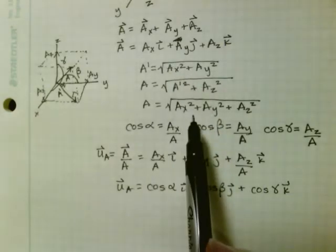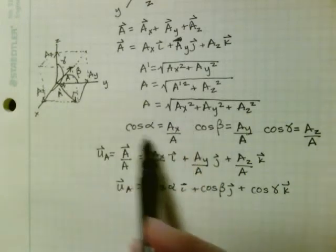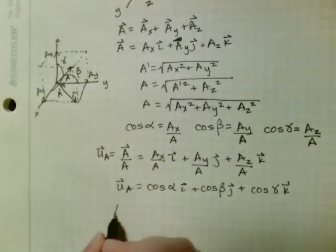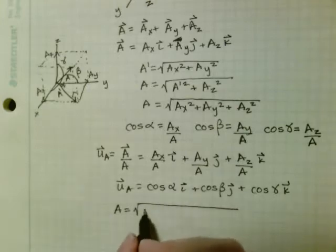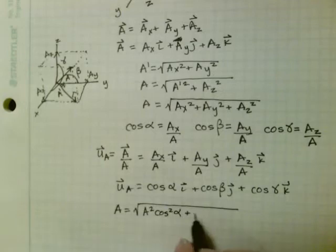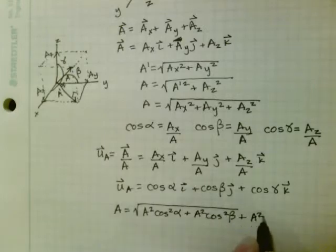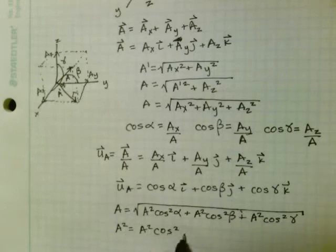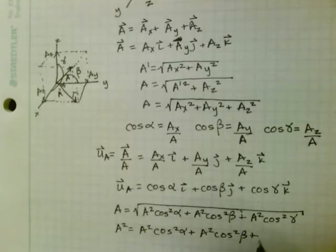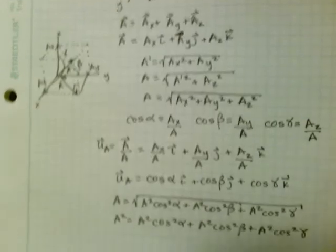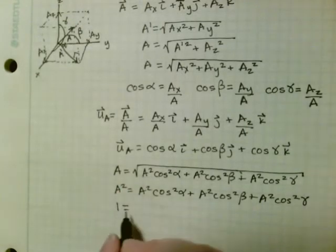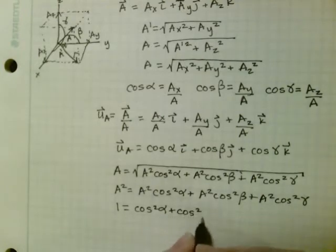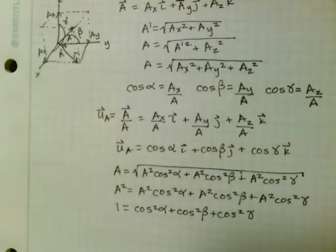So using this equation that we derived from this triangle, we can substitute ax in for a cosine alpha. So a is equal to the square root of a squared cosine squared alpha plus a squared cosine squared beta plus a squared cosine squared gamma. And now we can square the whole thing. So we get a squared is equal to a squared cosine squared alpha plus a squared cosine squared beta plus a squared cosine squared gamma. Now we divide the whole thing by a squared and we get that one is equal to cosine squared alpha plus cosine squared beta plus cosine squared gamma, which is also a very helpful equation.